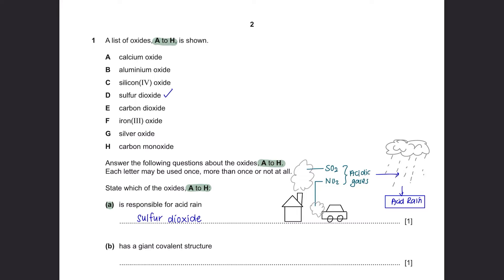Question B: Which oxide has a giant covalent structure? In your syllabus, when speaking of giant covalent structures, you should pay attention to graphite, carbon, and silicon oxide. So the answer here would be silicon oxide.